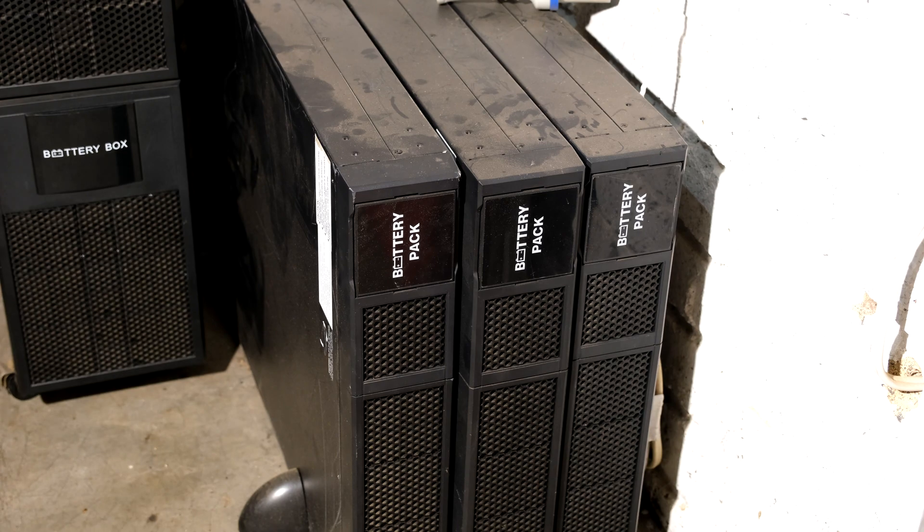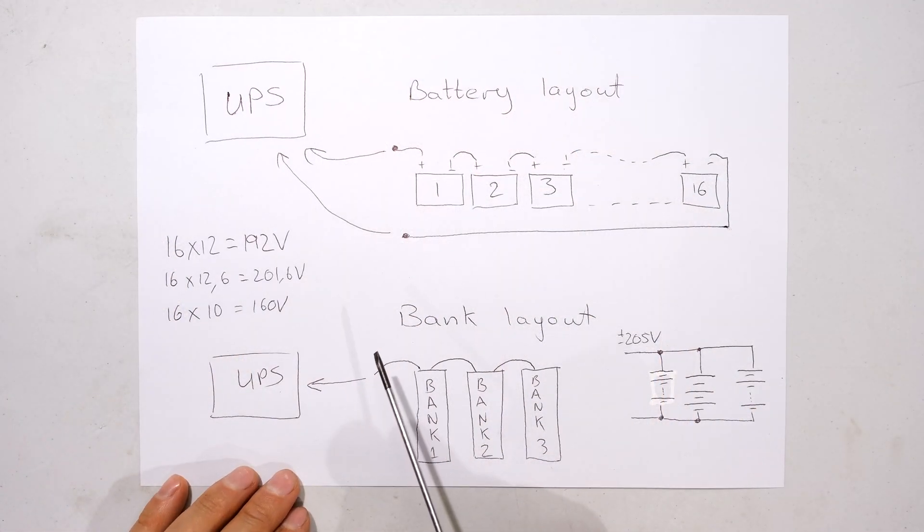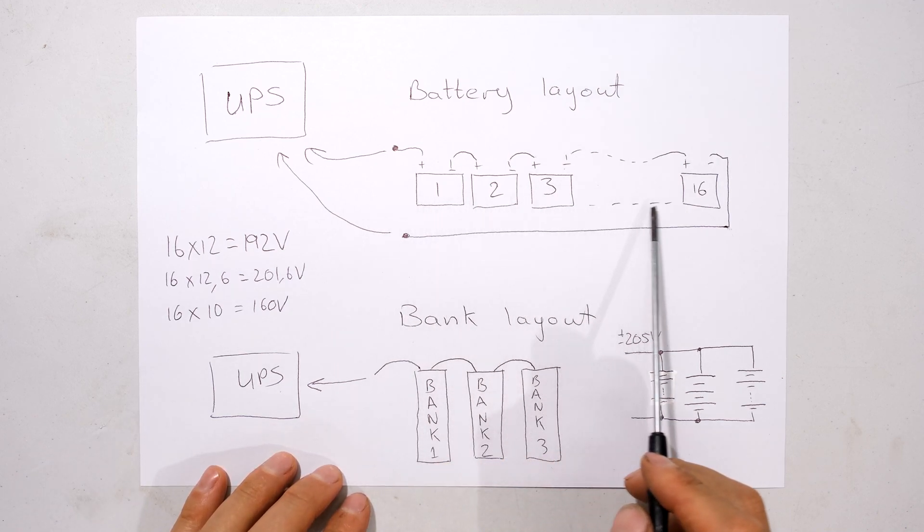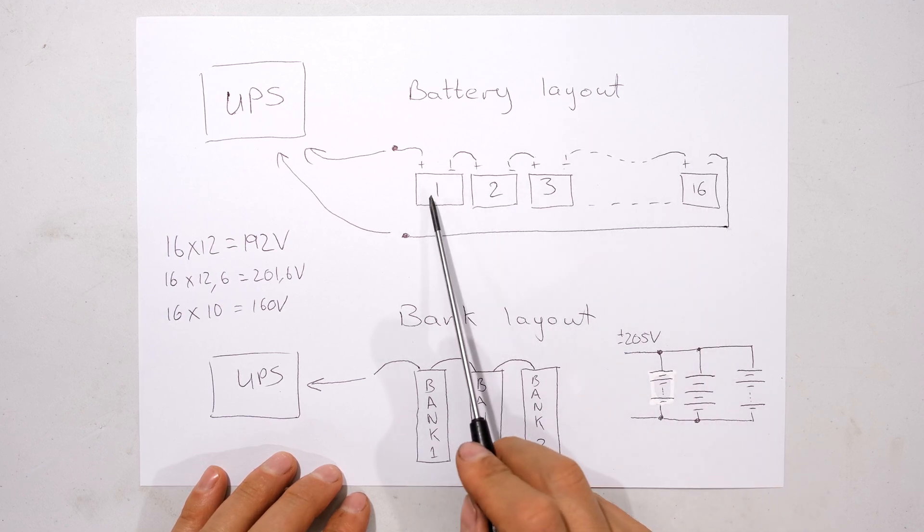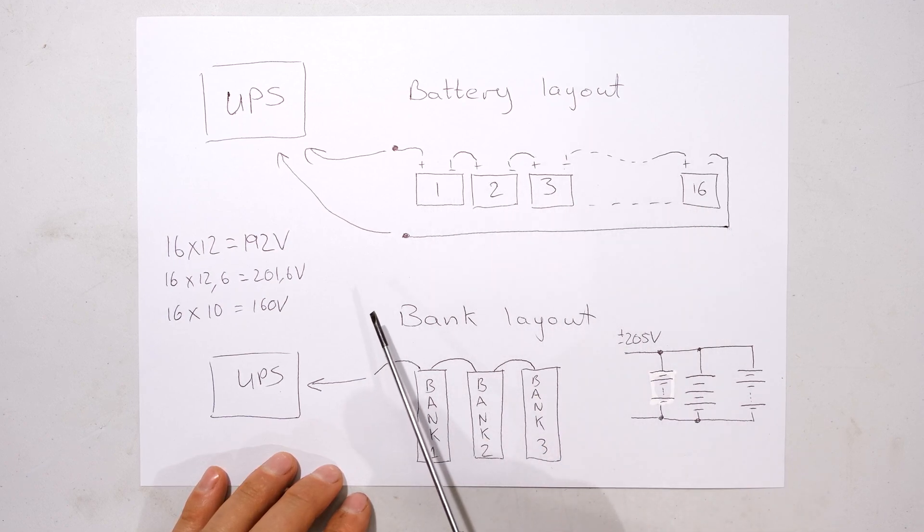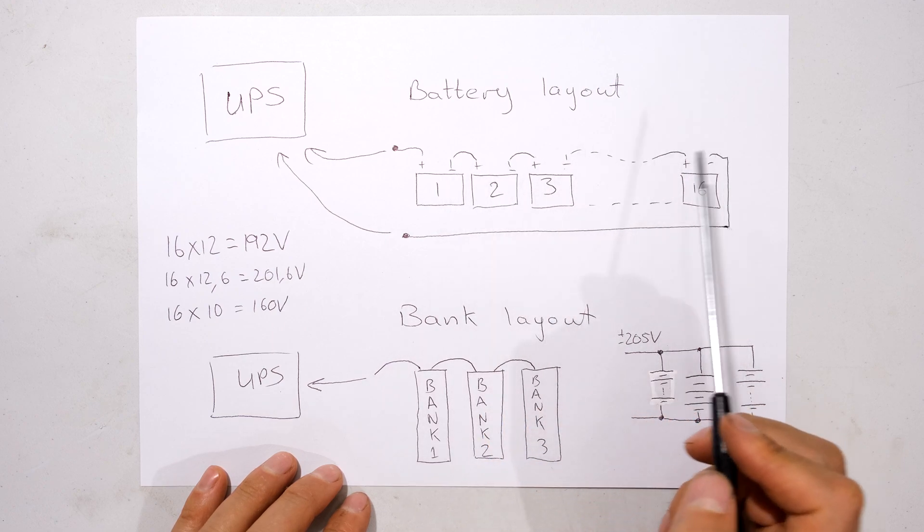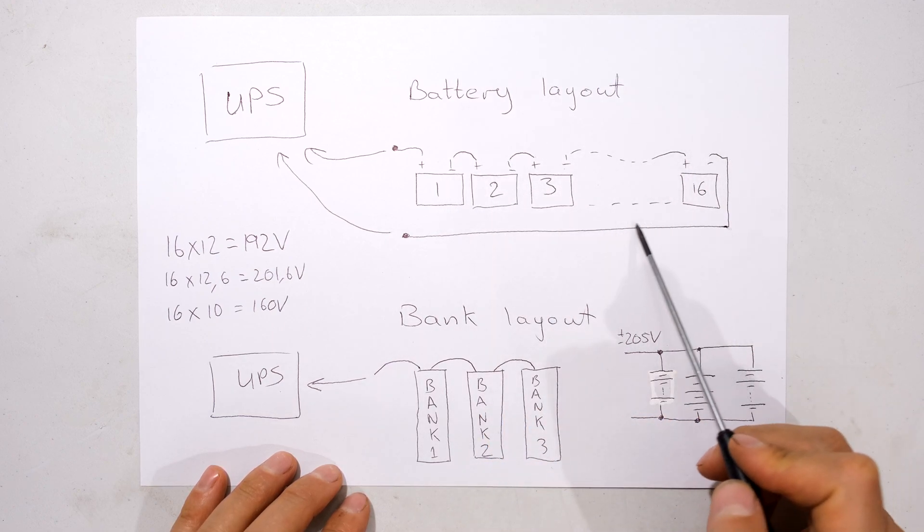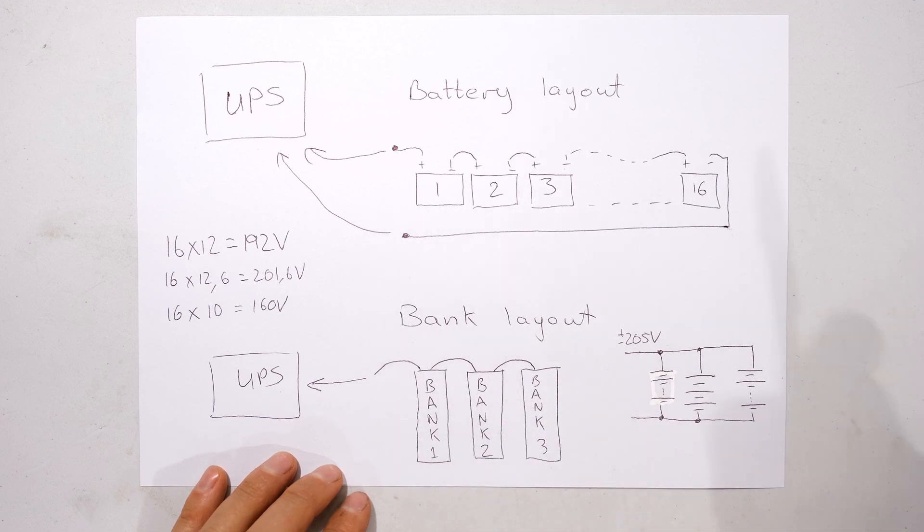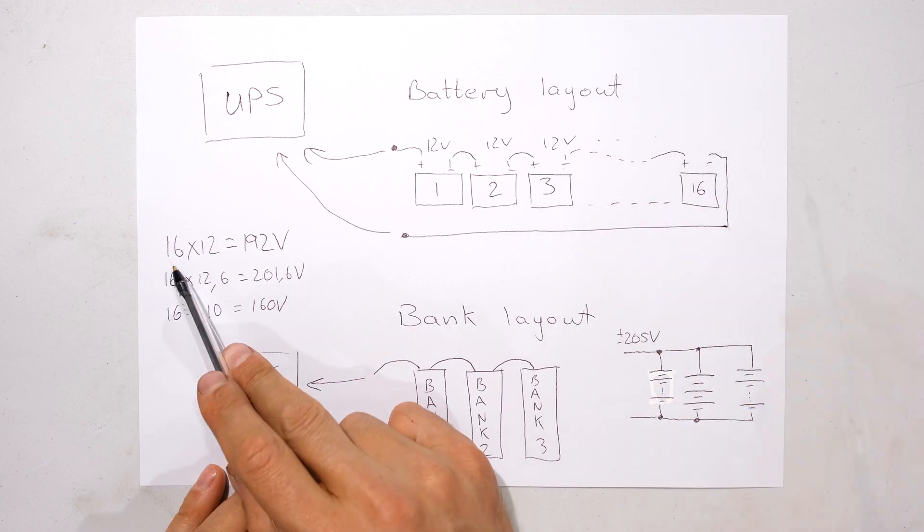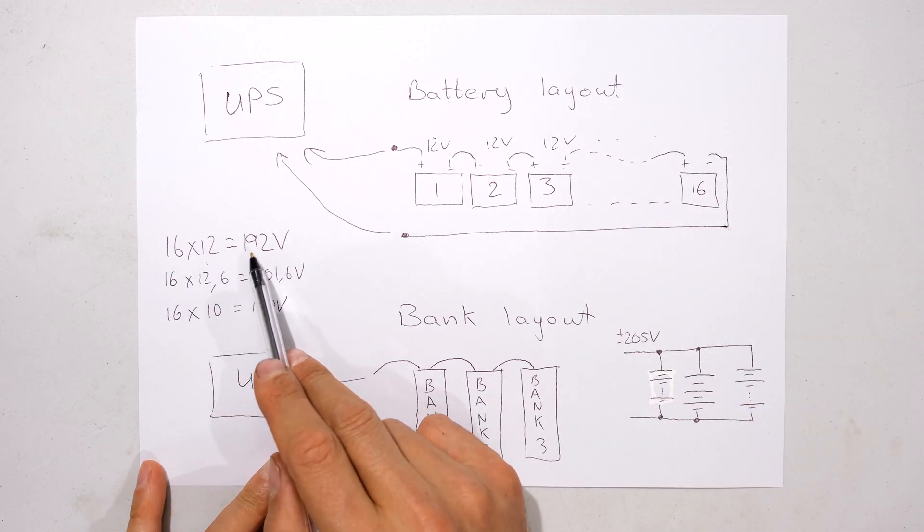I've drawn a diagram to demonstrate why this UPS has a problem with its battery backup. Each battery bank has the batteries laid out in series. You have your 16 lead acid batteries, they connect it as follows: negative to positive, negative to positive, negative positive, and the final battery goes back to the UPS. So all you're doing is you're saying 12 volts plus 12 volts plus 12 volts, and 16 times 12 you should get a minimum of 192 volts.